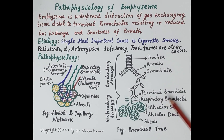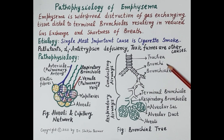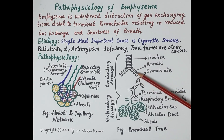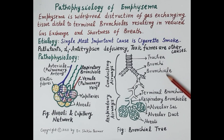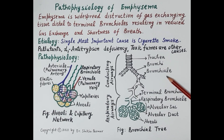The trachea is a hollow tube-like structure, also called the windpipe. The trachea branches into two branches termed as bronchi — a single branch is termed a bronchus, whereas the two are termed bronchi. The bronchi then again branch to produce smaller branches called bronchioles.